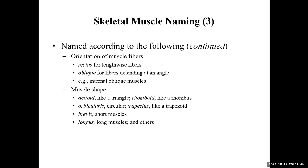One of my favorites is muscle shape. Deltoid is a triangular shaped muscle that sits on your shoulder. Rhomboid is a four-sided geometrical structure. Orbicularis is circular. Trapezius is a trapezoid — again a four-sided structure. Brevis means short, longus means long.